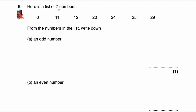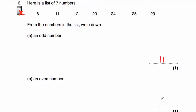Question number 6 says: here's a list of 7 numbers — 6, 11, 12, 20, 24, 25, and 29. From the numbers in the list, write down an odd number. An odd number ends in either a 1, 3, 5, 7, or 9. So 6 is even, 11 is odd, 12 is even, 20 and 24 can't be written down. You could write down 25 or 29. So your odd number could be 11, 25, or 29. Part B: write down an even number. You could write down 6, 12, 20, or 24.